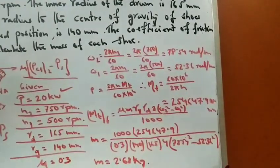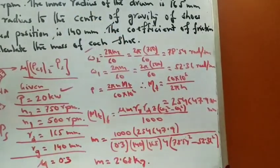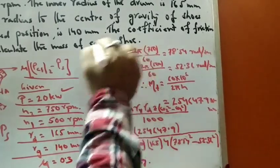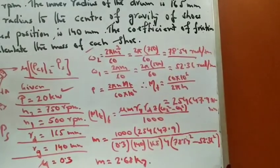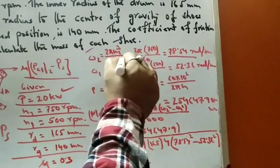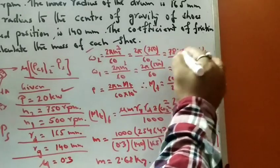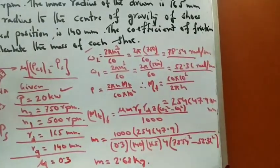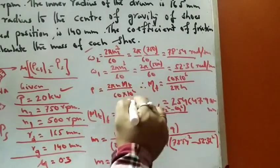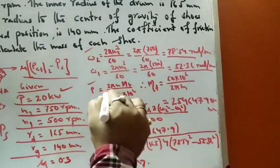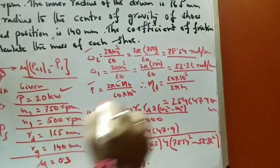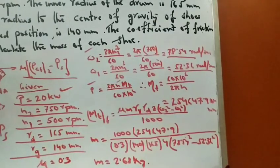From these data, we first calculate omega2 — that is when it is in contact — using 2*pi*N2/60. Substituting N2 = 750 rpm, we get omega2 = 78.54 rad/s. Then substituting N1 = 500 rpm, we get omega1 = 52.36 rad/s. For power, the formula is P = 2*pi*N*Mt / 60000. Power and N2 are known, so we can solve for the torque Mt.